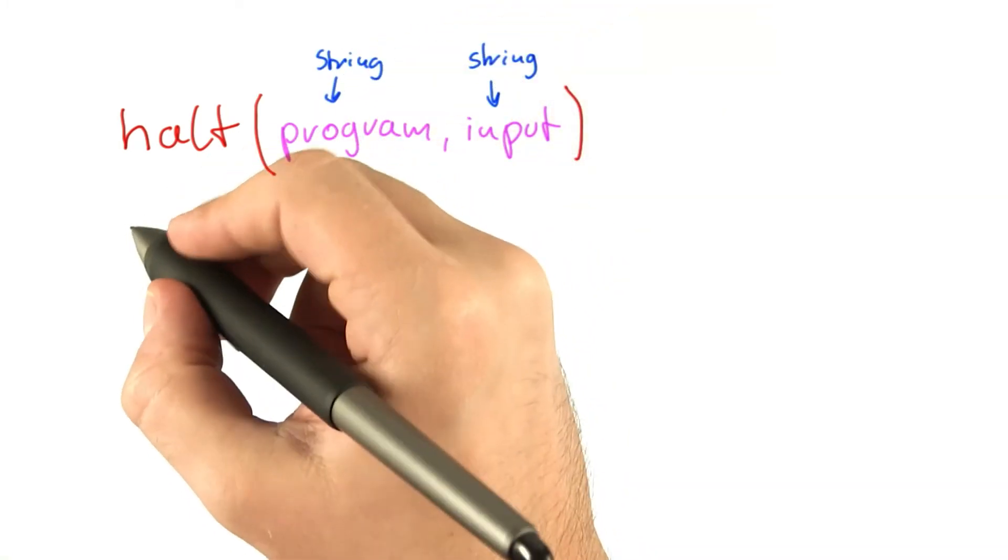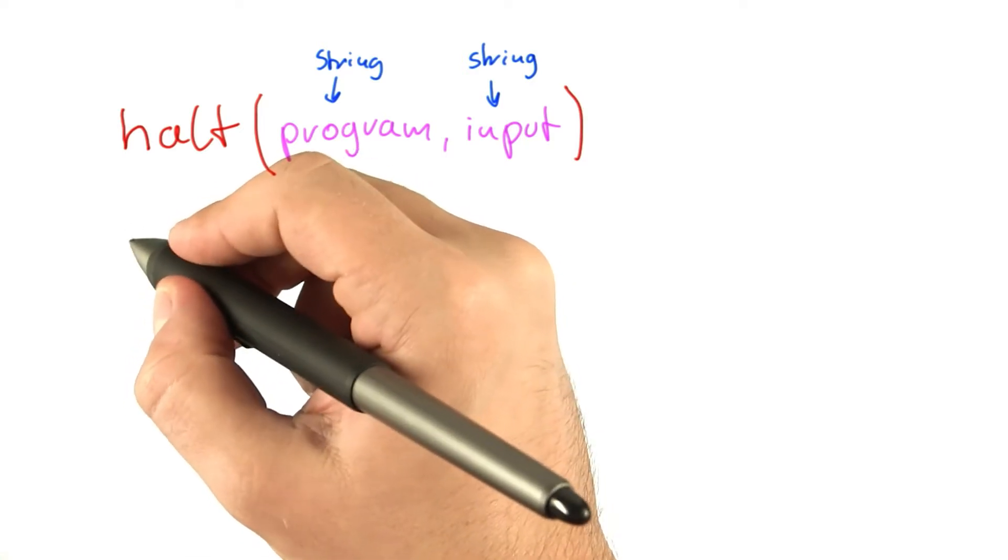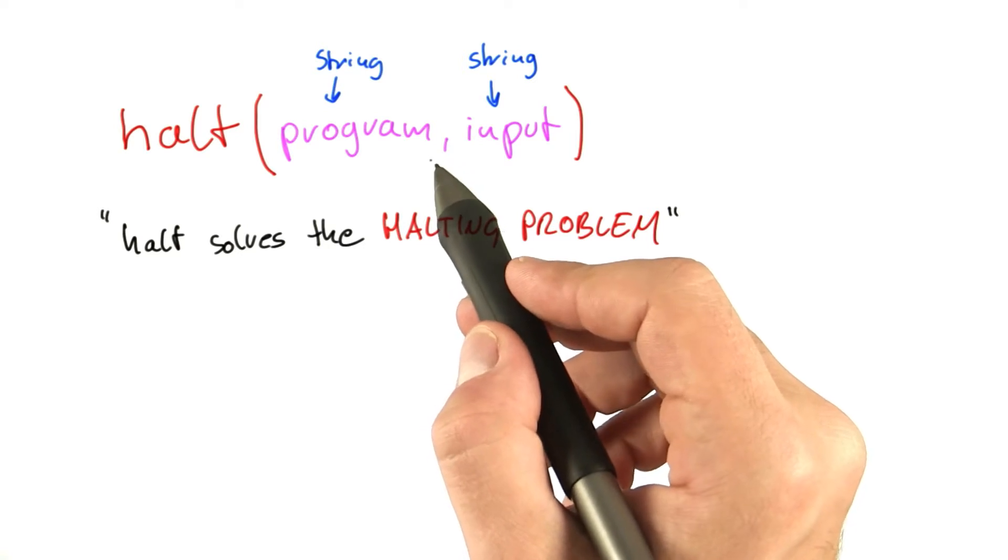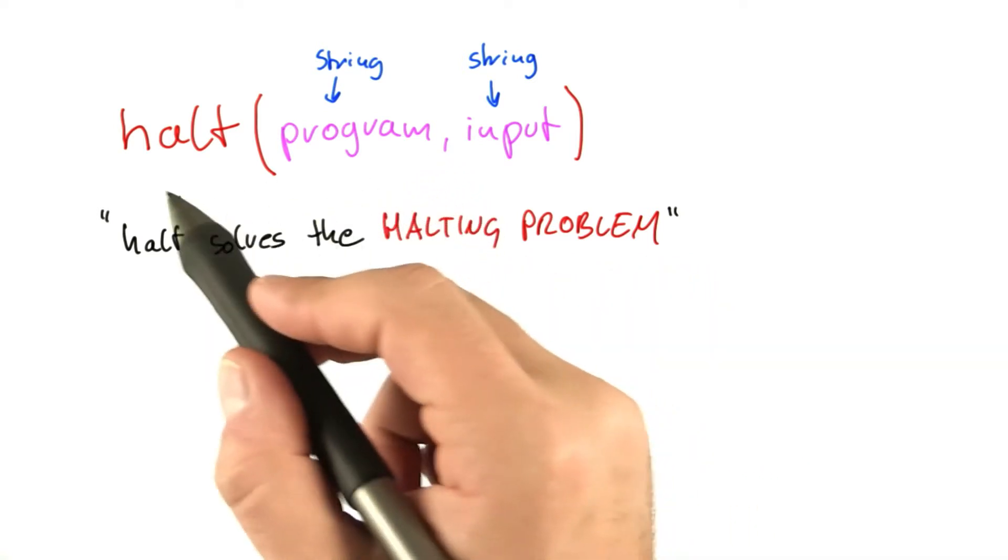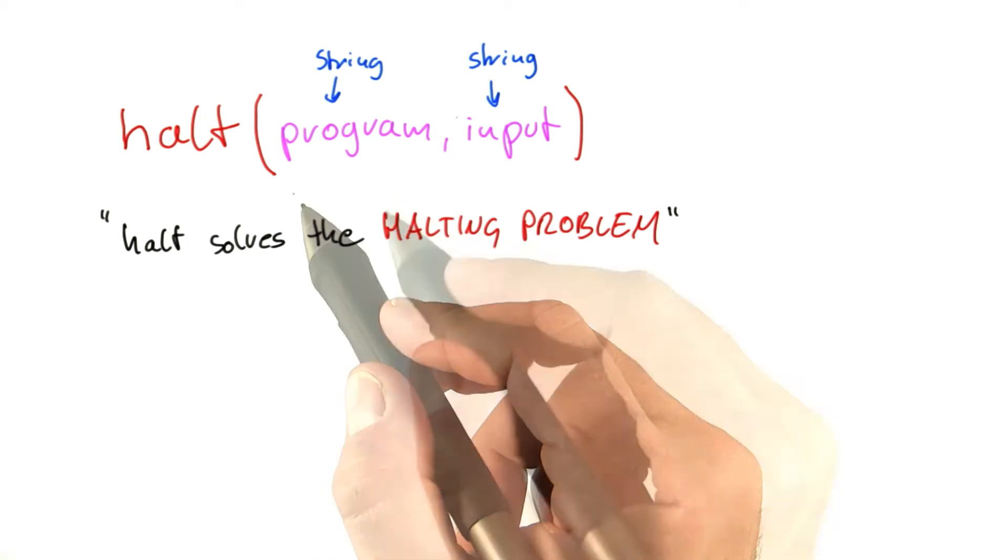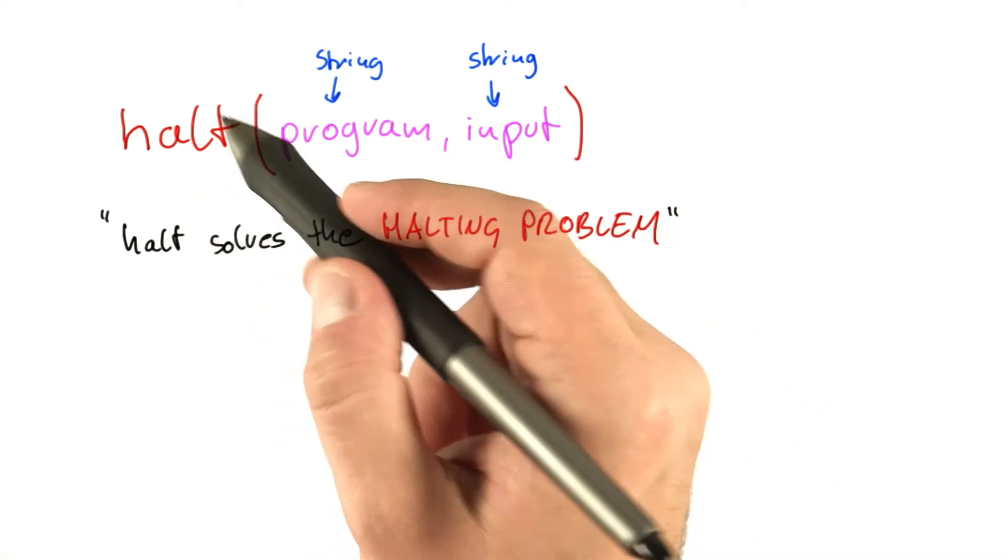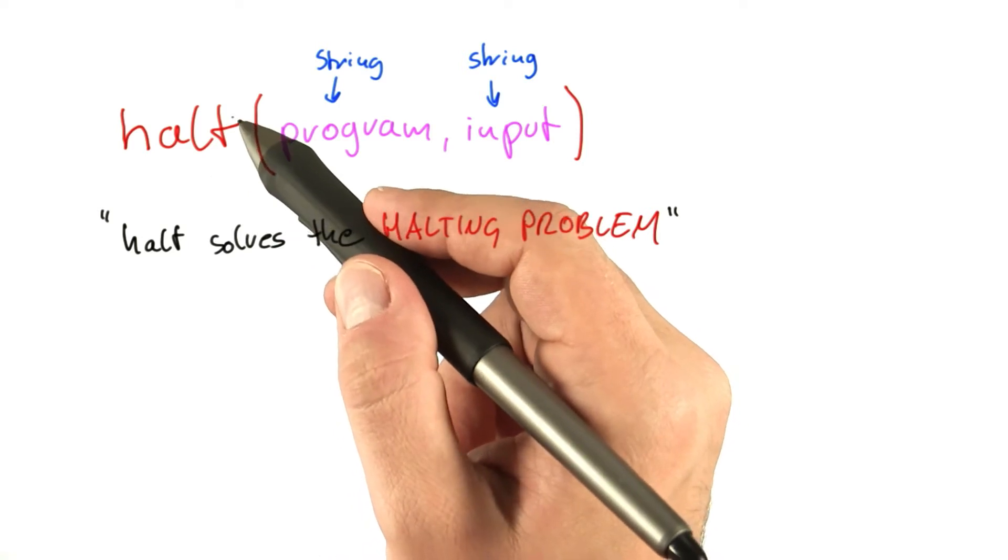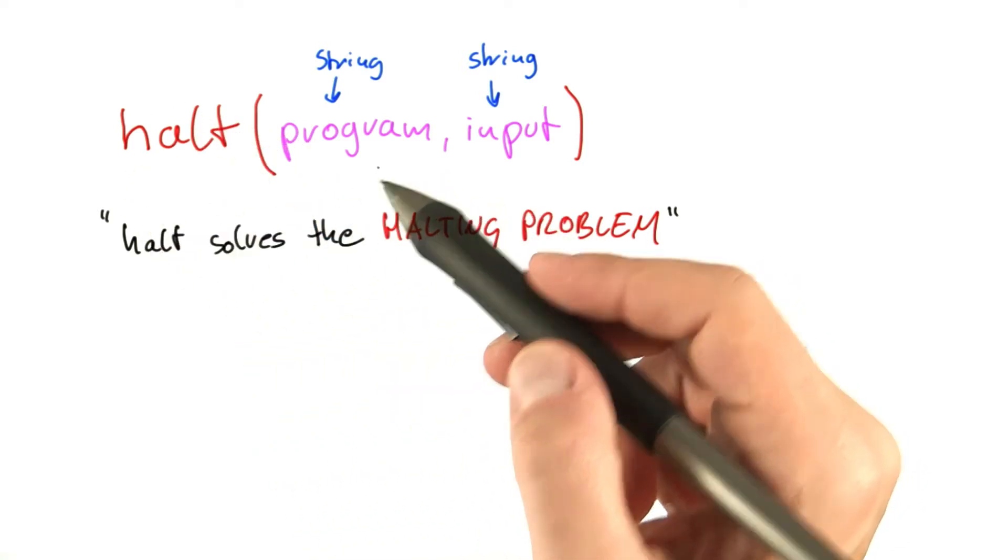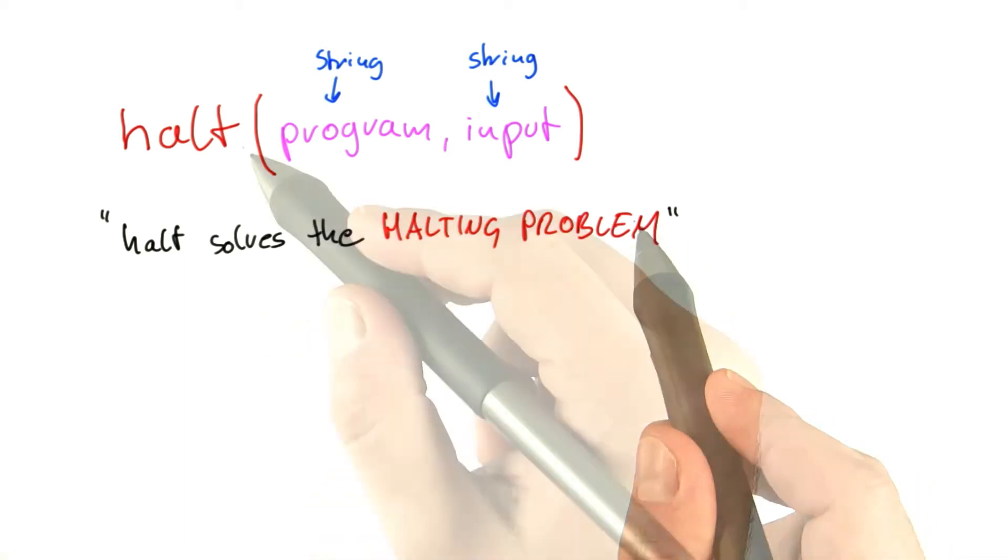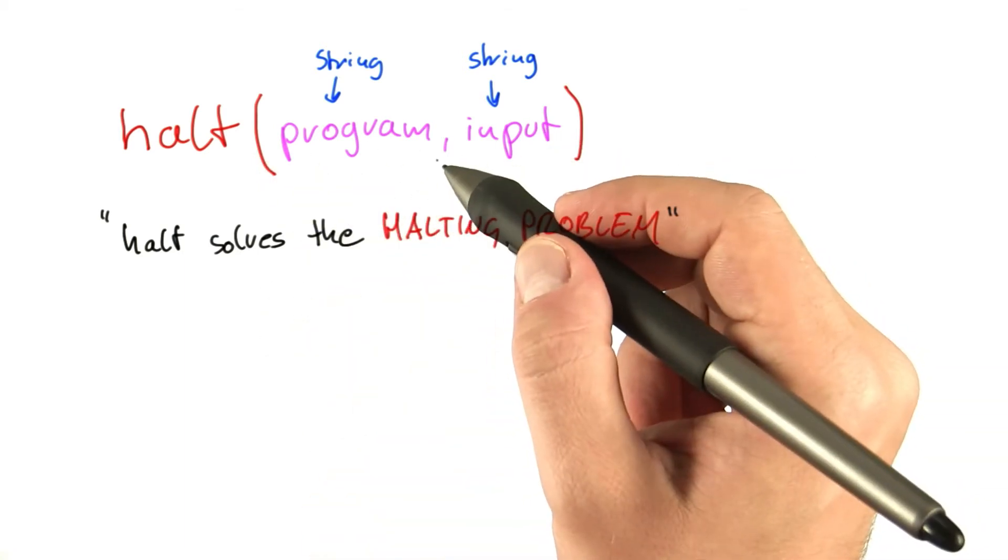Our specification will be: halt solves the halting problem. Notice that we do not say how long halt has time for this. Halt can be an amazingly complicated algorithm. It basically has unlimited resources. This algorithm can solve NP-complete problems. It can solve worse problems. We don't really care. The only thing we care about is that halt solves the halting problem in some finite amount of time.